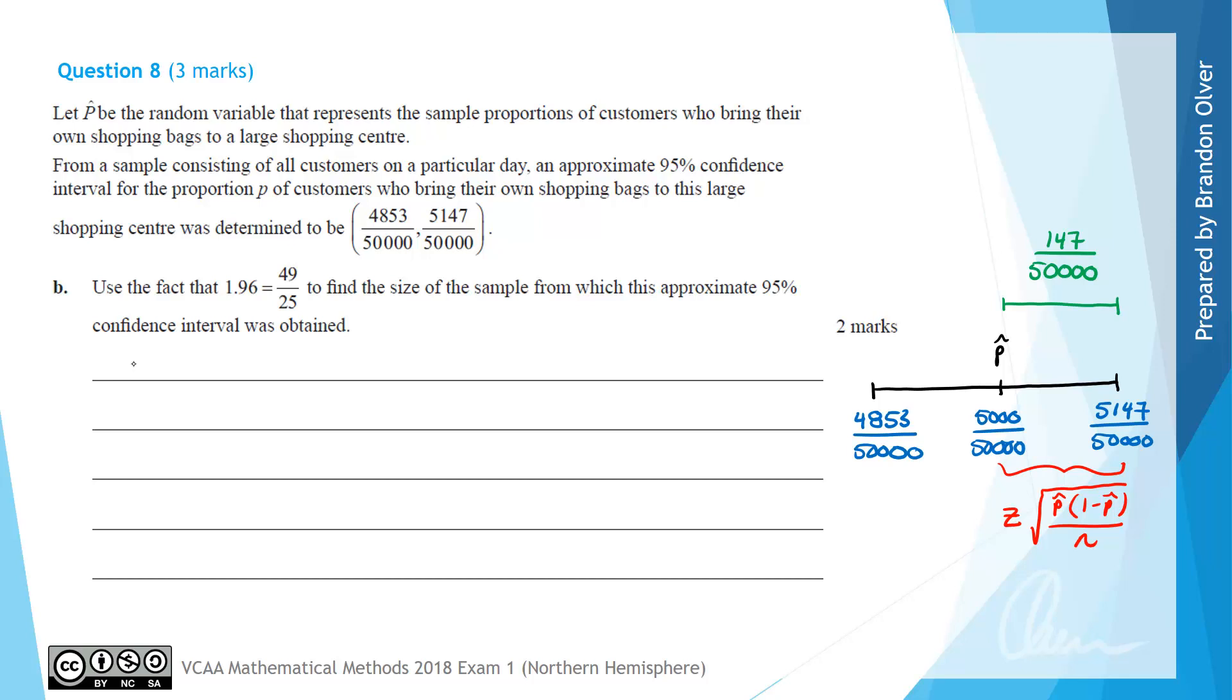From what we discussed, that interval length of 147/50000 equals 49/25, the Z value, times the square root of (1/10) times (9/10) all divided by N, which is the sample size.